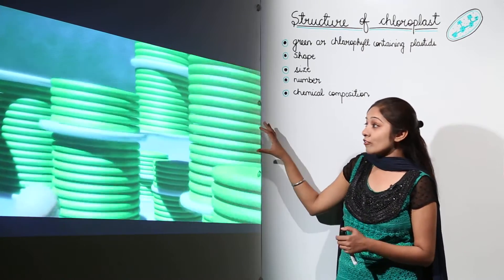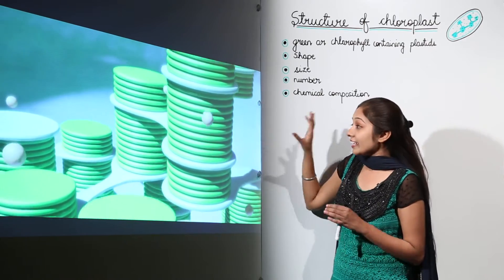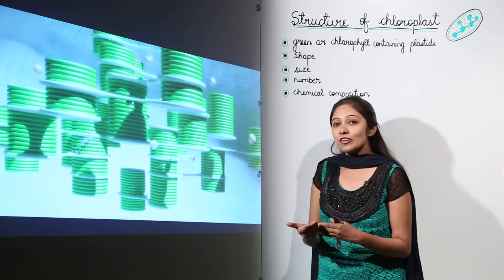This process of photosynthesis, which takes place in chloroplasts, accounts for life on Earth. How does it account for life on Earth?